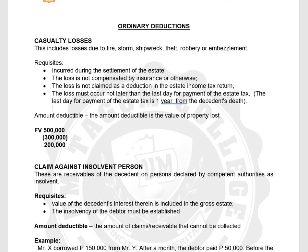Next, we have claims against insolvent persons. These are receivables of the decedent from persons declared by competent authorities as insolvent. A claim against an insolvent person is a form of loss but is presented as a separate item deduction in the estate tax return. For it to be claimed as a deduction, as a rule, the value of the decedent's interest therein must be included in the gross estate — meaning the gross amount of the receivable should be included.